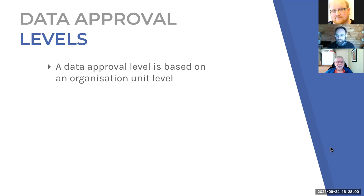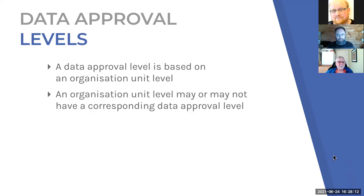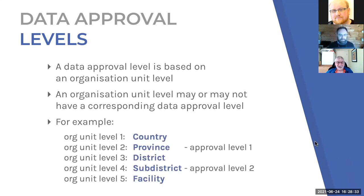A data approval level is based on an organization unit level. An organization unit level may or may not have a corresponding data approval level. You don't have to approve at every org unit level — you could have five org unit levels and only approve at the sub-district level and then the province level. It's up to you when you design the metadata for data approvals to decide which org unit levels, if any, you want to approve data at.